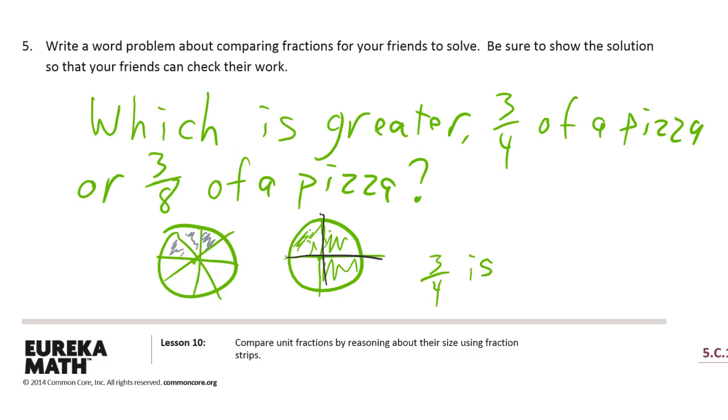And then three of these eighths. Write my answer to my own question. Three-fourths is greater than three-eighths. And again, that's only if they are both the same size pizza. So if these are both small pizzas or both large pizzas, then you can say that. But if one's a large and one's a small, it could come out differently.